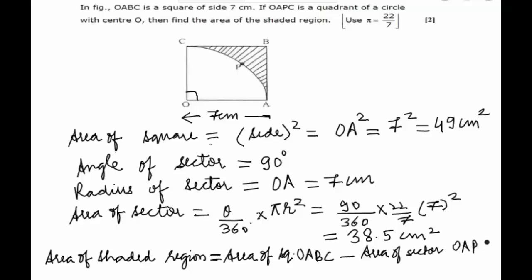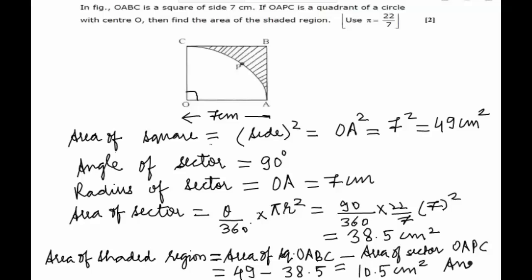The area of OAPC subtracted from the square gives us 49 minus 38.5, which equals 10.5 centimeters squared. This would be the answer to our problem.